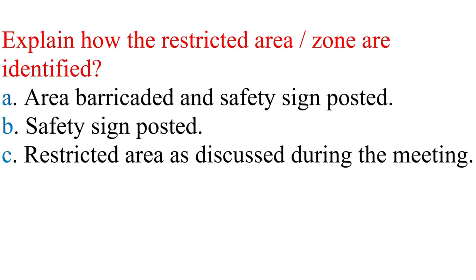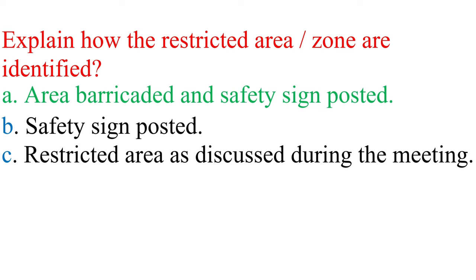Question: Explain how the restricted area and zone are identified. a. Area barricaded and safety sign posted, b. Safety sign posted, c. Restricted area as discussed during the meeting. Answer: a. Area barricaded and safety sign posted.